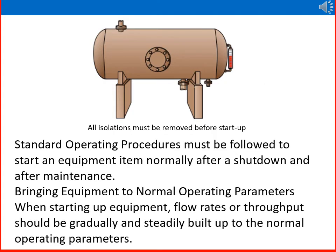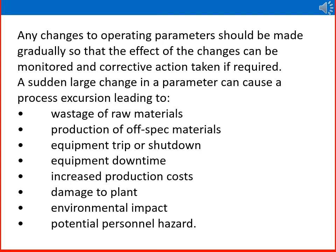Standard operating procedures must be followed to start equipment normally after a shutdown and after maintenance, bringing equipment to normal operating parameters. When starting up equipment, flow rates or throughput should be gradually and steadily built up to normal operating parameters. Any changes to operating parameters should be made gradually so that the effect of the changes can be monitored and corrective action taken if required.